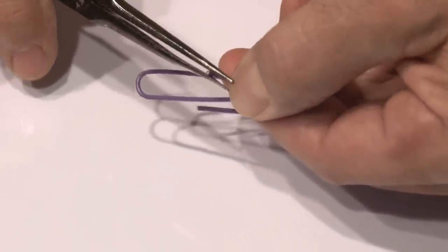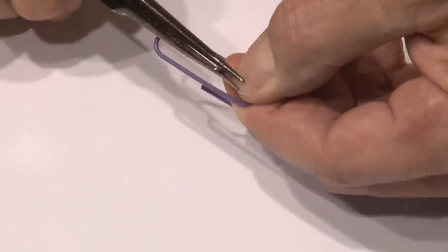And finally, that same end we just bent, we're going to bend it over so it touches the other side of the paperclip. It'll look like this when you're done.